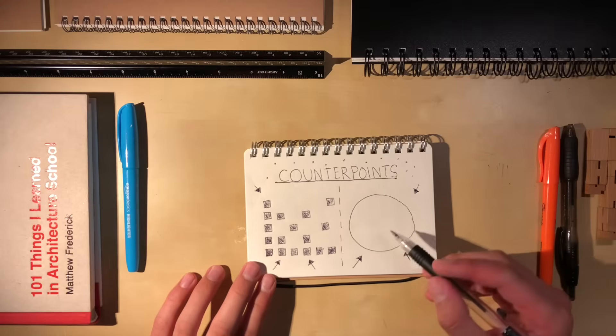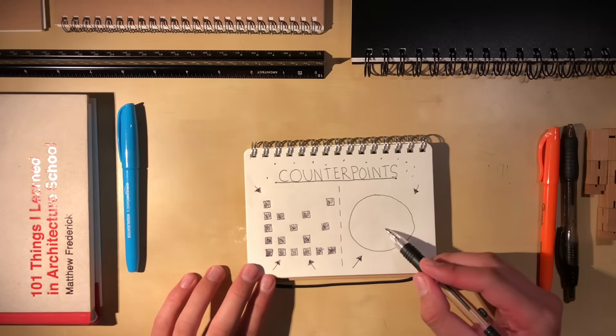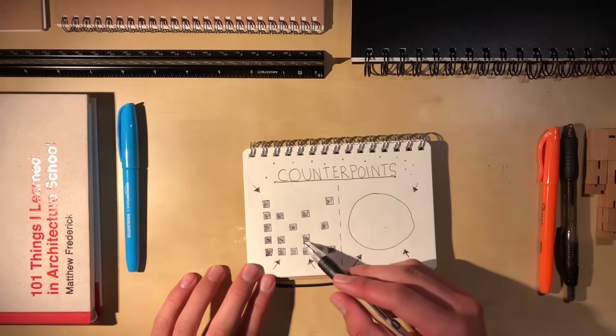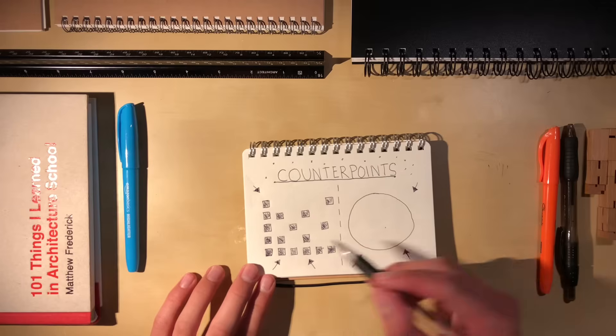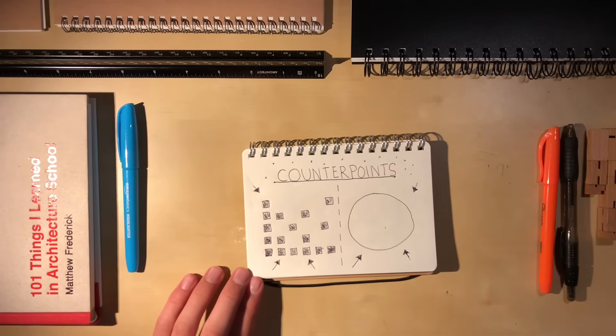As you can see in this drawing, these shapes, although not being equal, still produce a sense of balance because they are counterpoints of each other.